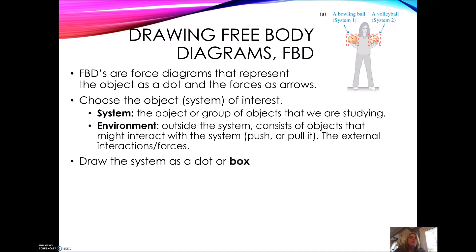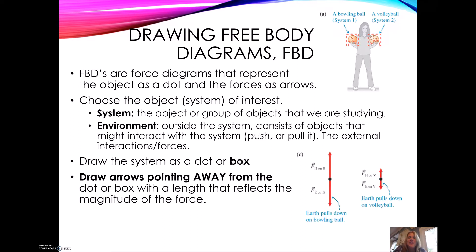When we draw a system, we represent it simply as a dot or box. You'll see I represented the bowling ball as a dot, and the same with the volleyball, which makes sense because they're little circles. Always draw your force arrows away from the dot or box with a length that reflects the magnitude of the force. If we take a look at the bowling ball, here's the force of her hand on the ball — she's holding the ball, that's a contact force. We'll have another name for that force in a bit, but right now we'll call it hand on ball.